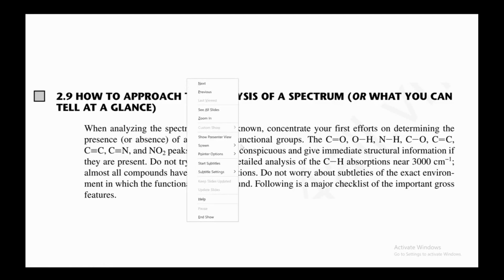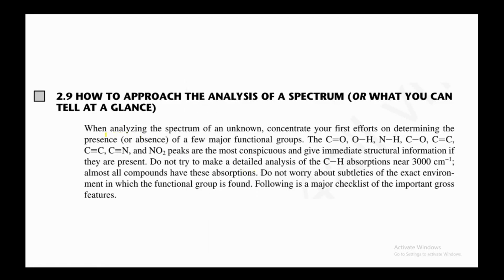When analyzing the spectrum of an unknown compound, your first efforts should be on determining the presence or absence of a few major functional groups. This is really important — whether something is present or absent. The major functional groups are: carbonyl, OH, NH, C–O, C=C, C≡C, C≡N, and nitro. These peaks are most conspicuous and give immediate structural information. Do not try to make a detailed analysis of the CH absorptions near 3000 cm⁻¹, as almost all compounds have these absorptions.